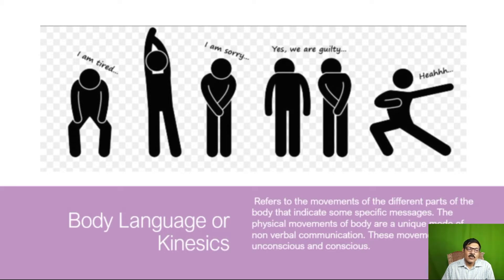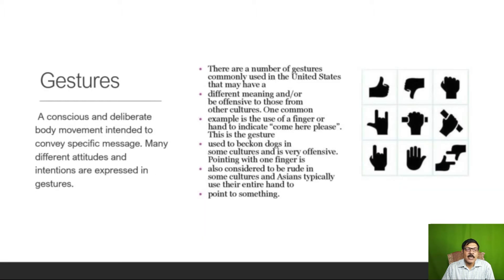Another form of visual communication is kinesics, or body language. It refers to the movements of different parts of the body that indicate some specific message. The physical movements of the body are a unique non-verbal communication and they can be conscious or unconscious. You can see these graphics denoting different things like 'I am tired,' 'I am sorry,' 'I am extremely sorry,' 'yes, we are guilty,' and so on. This is what we call kinesics or body language.